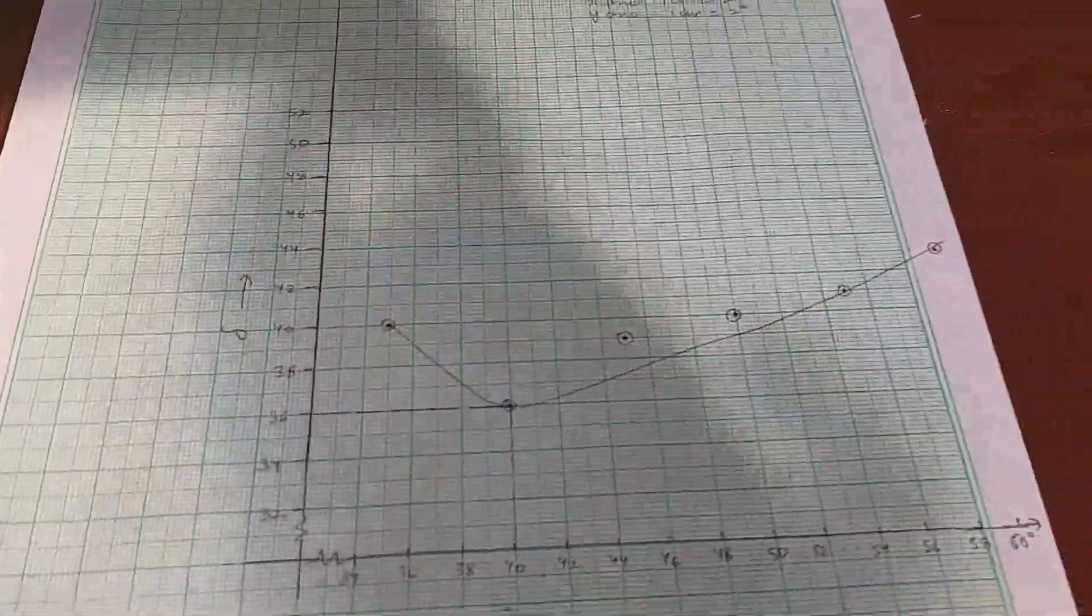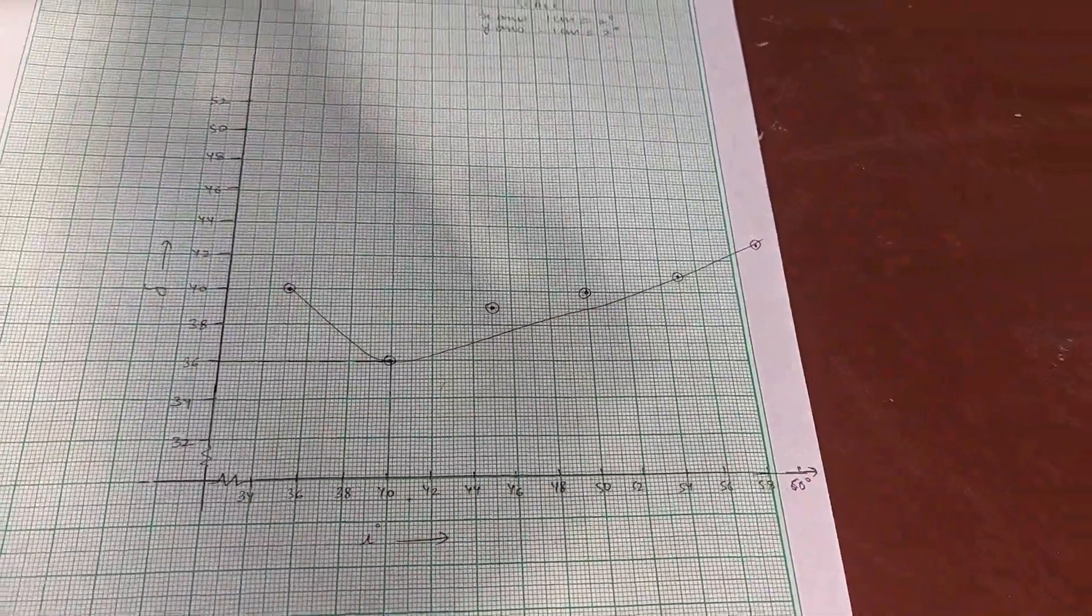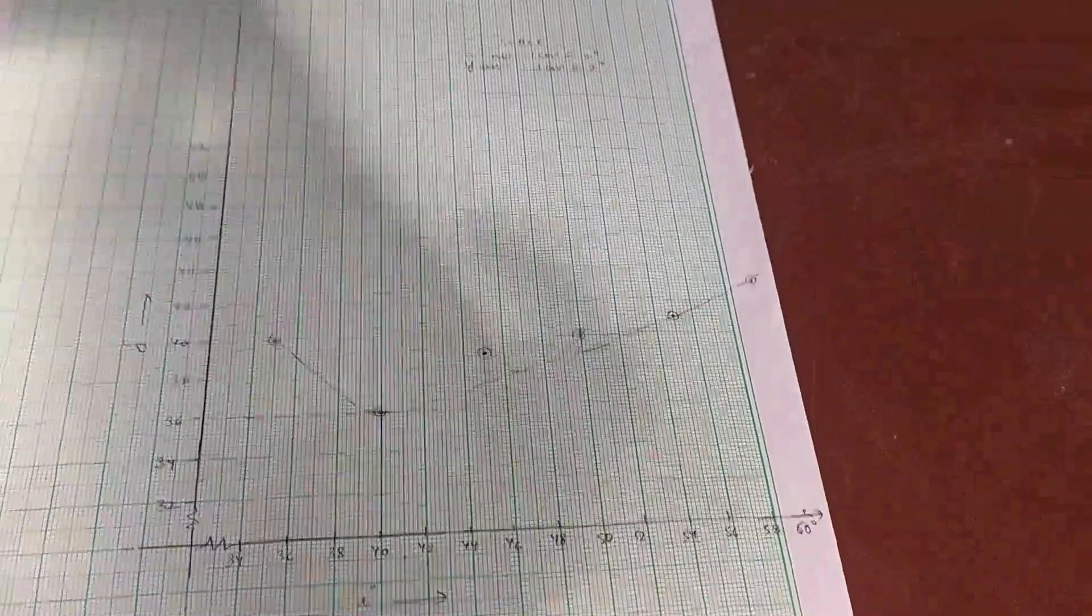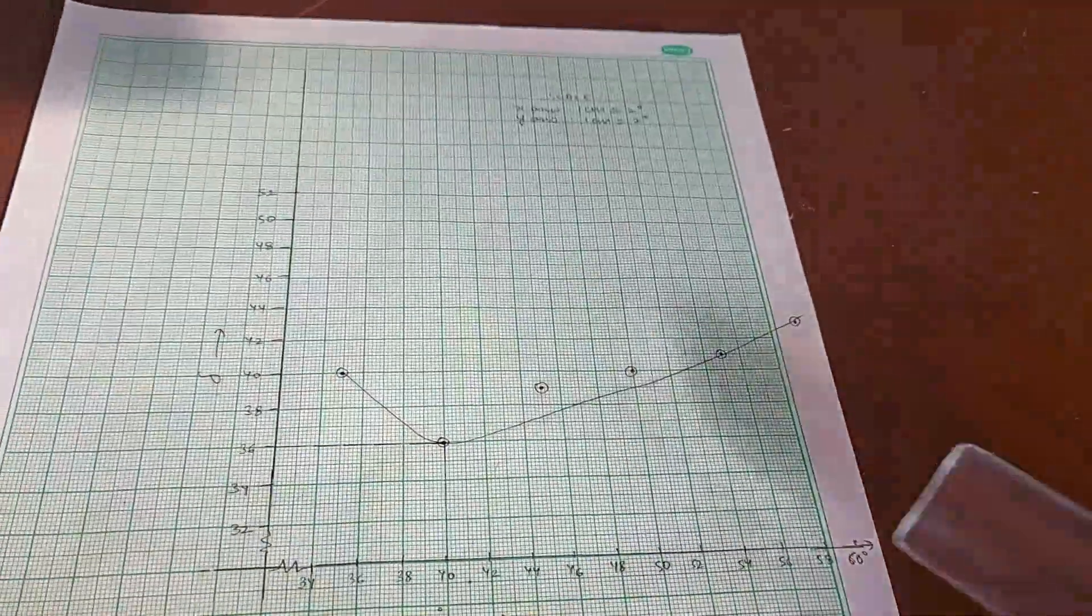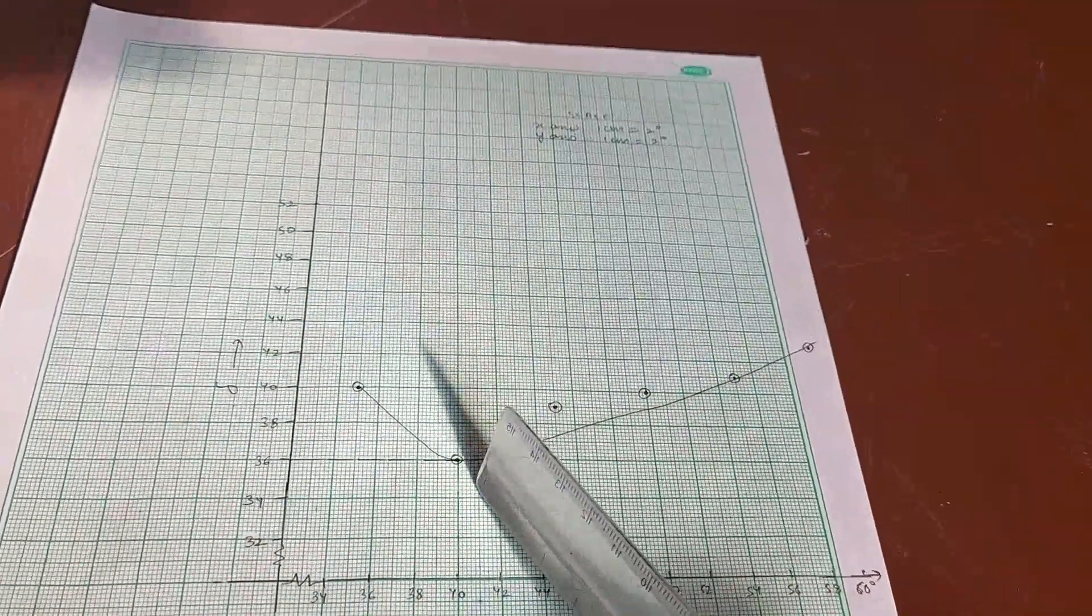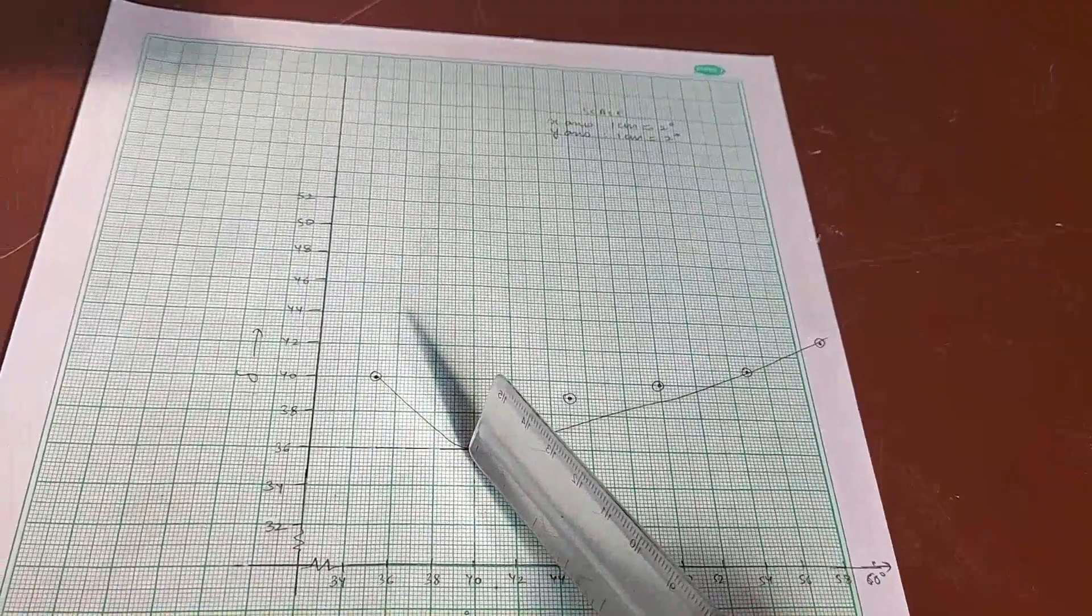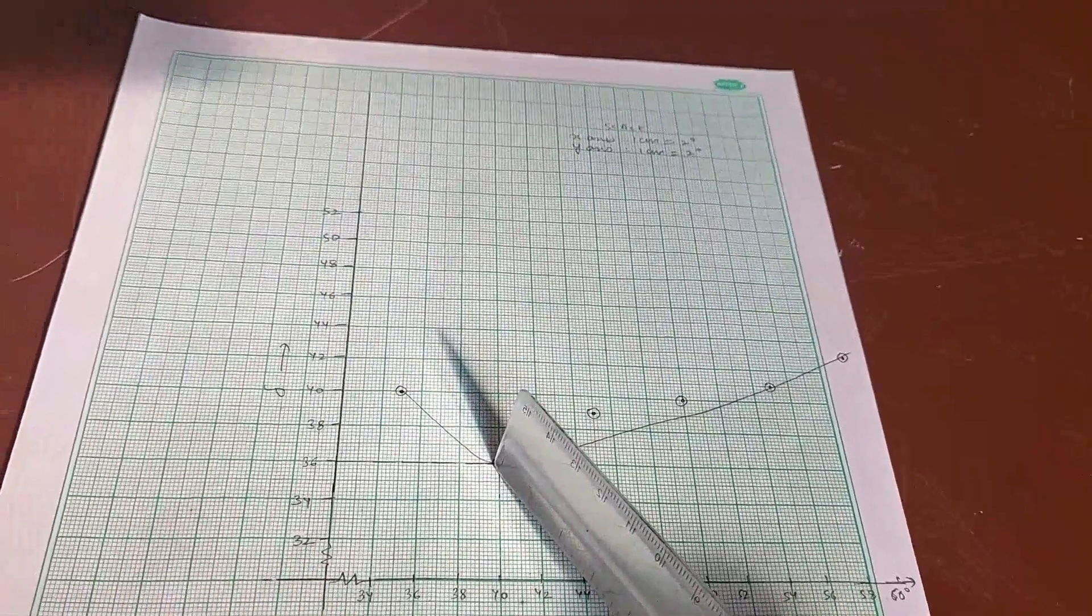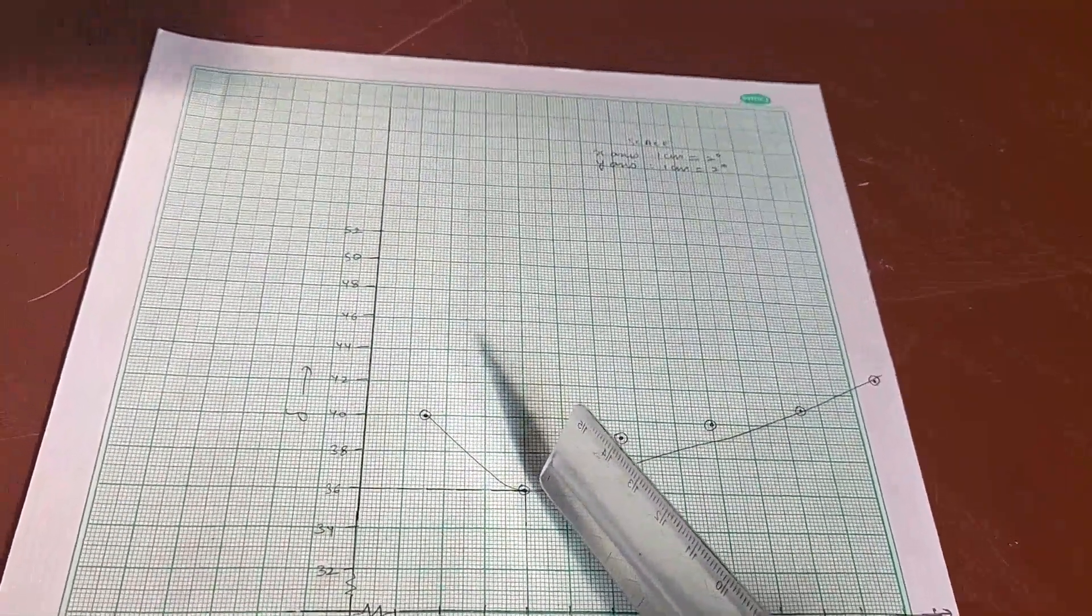Now this is the graph which you get after plotting delta with respect to angle i, and this is the point where you can see that the deviation is the least. This is the location which you have to use as the angle of minimum deviation for the calculation.